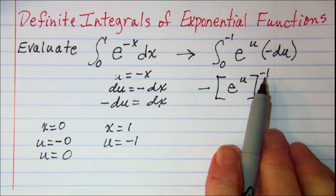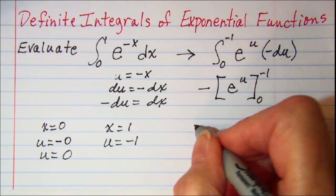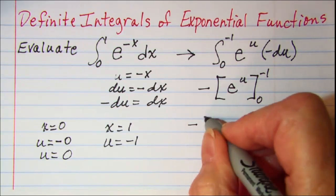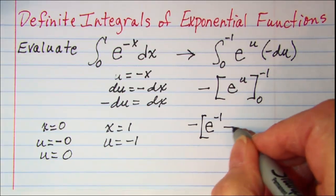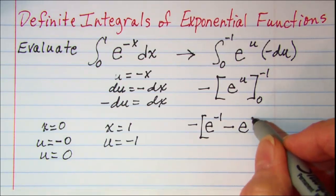We're going to substitute in 0 and negative 1. Our fundamental theorem of calculus says we need to put this number in first, so we have negative e to the negative 1 power, subtract, and then put this number in, so e to the 0.